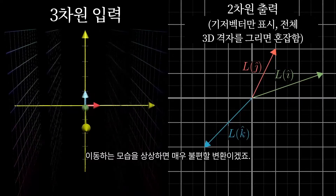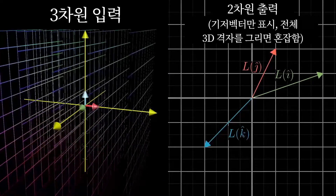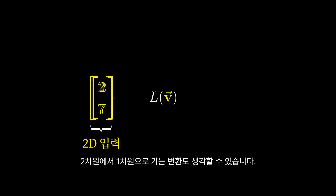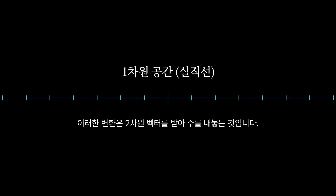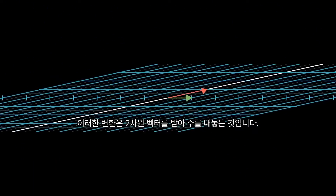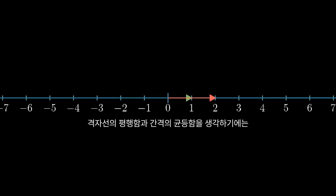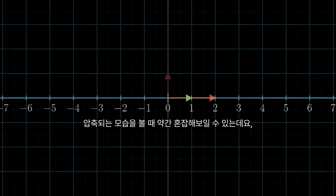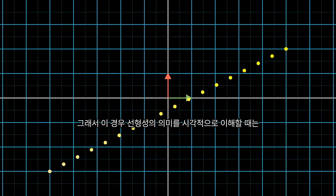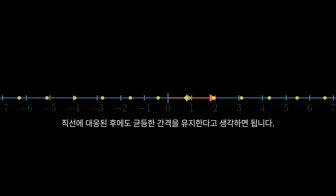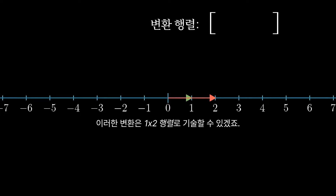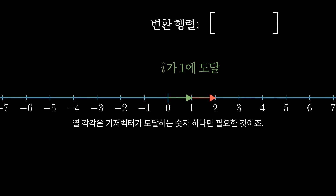A transformation that should feel very uncomfortable if you imagine going through it. You could also have a transformation from two dimensions to one dimension. One dimensional space is really just the number line, so a transformation like this takes in 2D vectors and spits out numbers. The visual understanding for what linearity means here is that if you have a line of evenly spaced dots, it would remain evenly spaced once they're mapped onto the number line. One of these transformations is encoded with a 1 by 2 matrix, each of whose two columns has just a single entry. The two columns represent where the basis vectors land, and each one of those columns requires just one number — the number that that basis vector landed on.